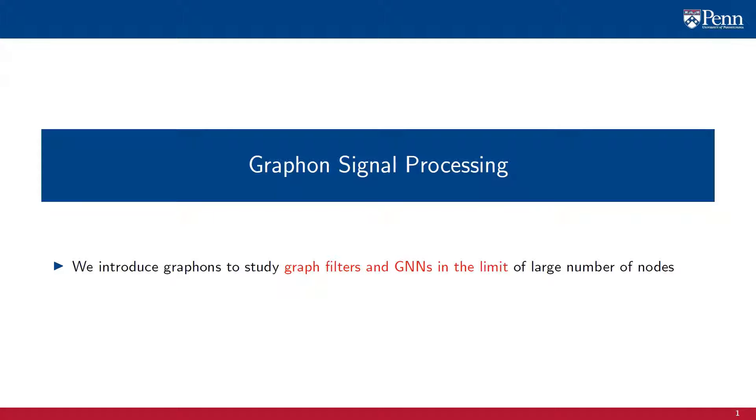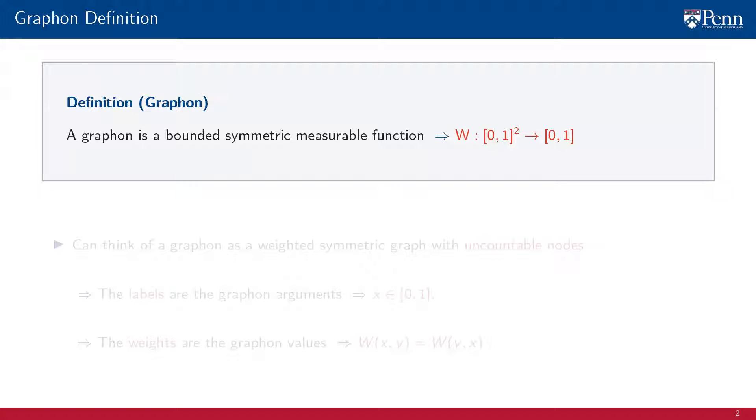In this lecture, we introduce graphons to study graph filters and GNNs in the limit of graphs with very large numbers of nodes. A graphon is a bounded symmetric measurable function w mapping points of the unit square to the unit interval. This definition is such that we can think of graphons as weighted symmetric graphs with an uncountable number of nodes.